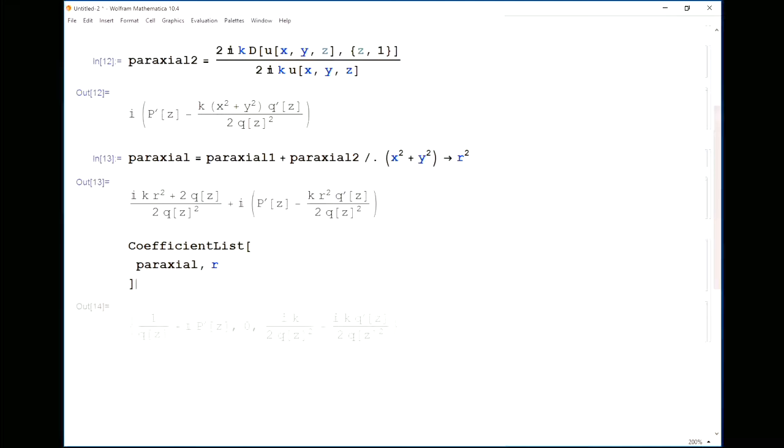we're going to set each of these coefficients to 0. So if I set this to 0, I'll get something which is not incredibly useful because it's saying that this whole list is equal to 0. I have to use a nice piece of Mathematica syntax here called thread.